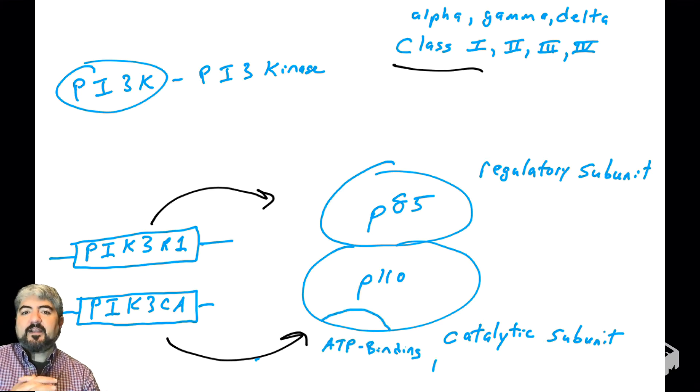Another gene, PIK3R1—R1 for regulatory subunit, CA for catalytic subunit—PIK3R1 codes for the protein P85, which is a regulatory subunit of PI3 kinase. PI3 kinase is actually not one single protein, but two proteins coming together in quaternary structure. What else do we need to know about PI3 kinase? These proteins have domains. There are three important domains to talk about when we talk about PI3 kinase.